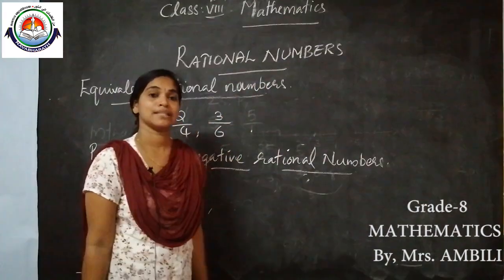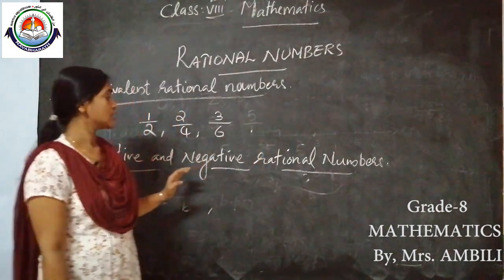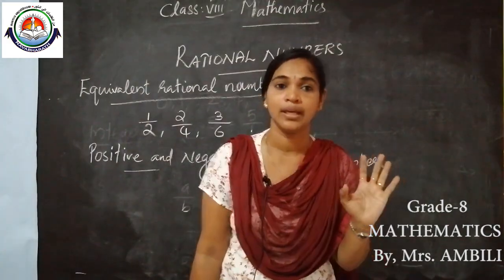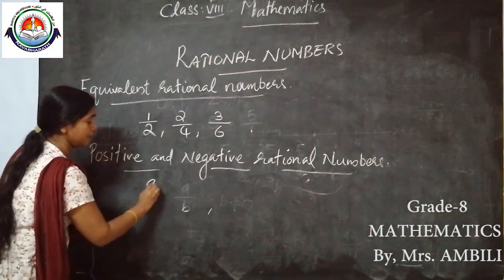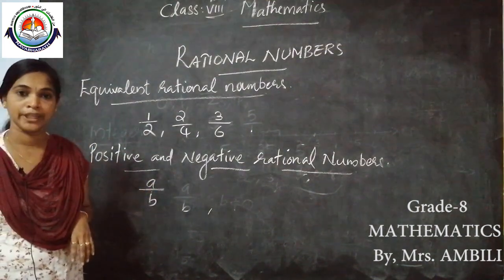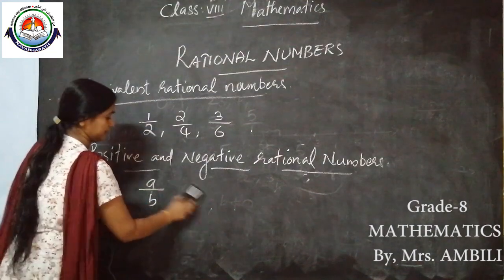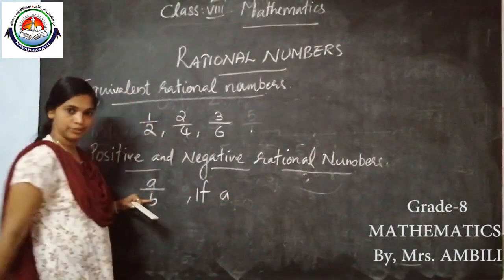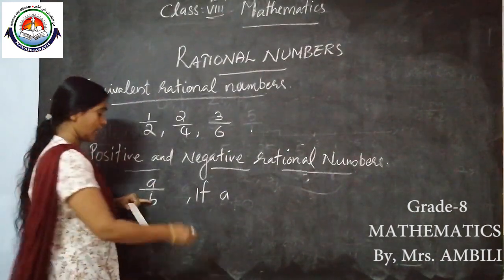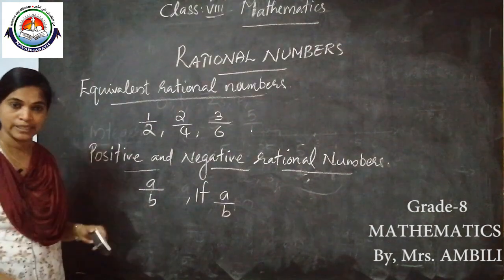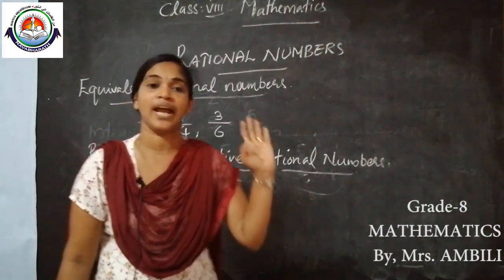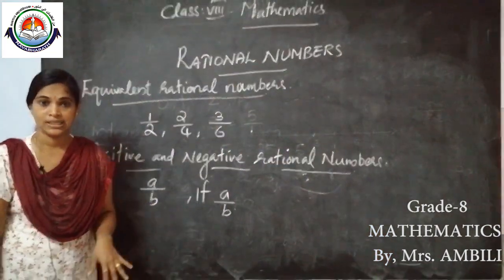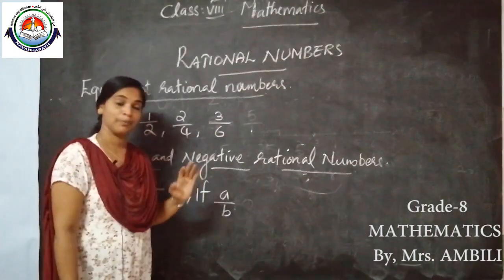All rational numbers except 0 are either positive or negative rational numbers. So if A/B is a rational number — if A is a positive number and B is also a positive number, then A/B is a positive rational number.